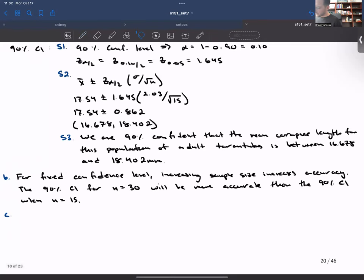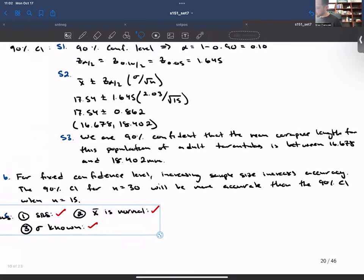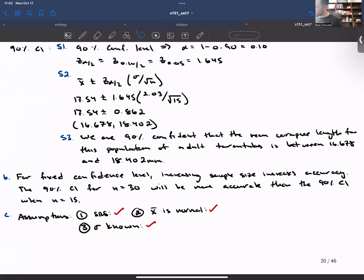The only difference here is that we are not able to use the normal probability plot now because we've changed our sample to N equals 30. But because we have 30 observations, X bar will be normal by the central limit theorem.